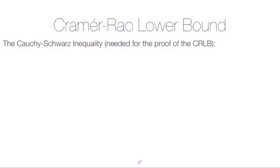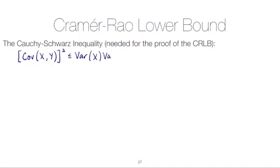The Cauchy-Schwarz inequality can be written in many different ways. If you've taken a linear algebra course you may have seen it in a different context related to inner products and norms, but we can think about covariances and variances as related to inner products and norms. So if we have two random variables X and Y, the square of the covariance will be less than or equal to the variance of X times the variance of Y.